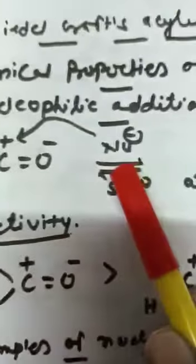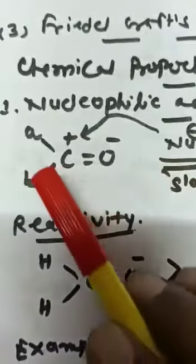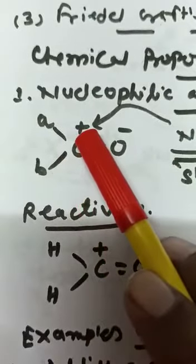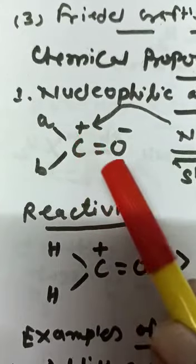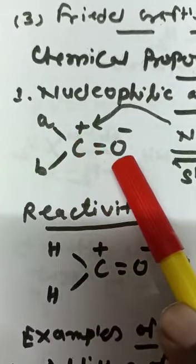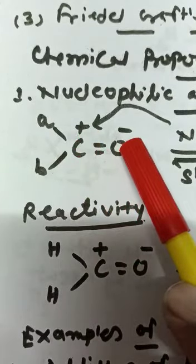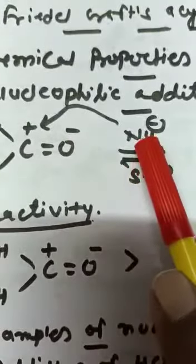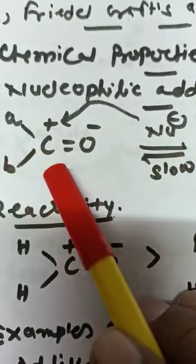During nucleophilic addition, on carbonyl carbon, positive charge is present whereas on oxygen atom, negative charge is present. So, nucleophile attacks on carbonyl carbon.